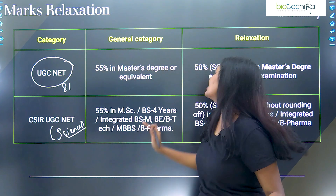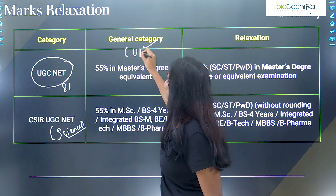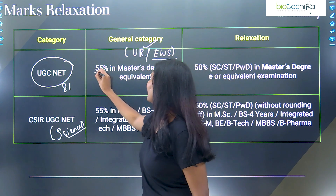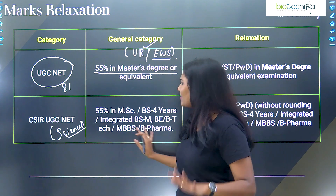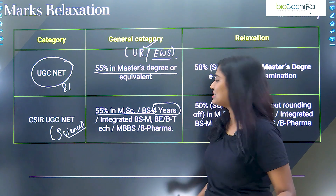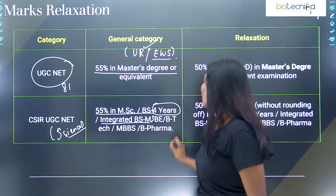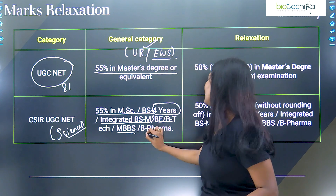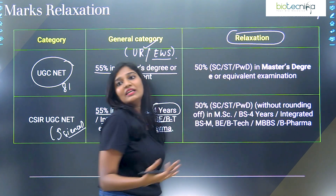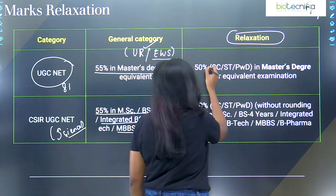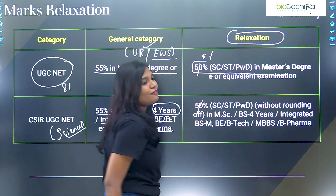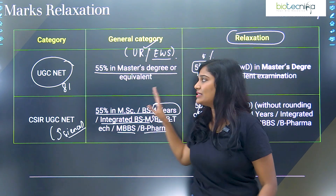For general category or EWS, it is 55% marks in your master's degree, and for reserved categories there is a 5% relaxation — meaning 50% marks are required. This 5% relaxation applies for both UGC NET and CSIR NET.